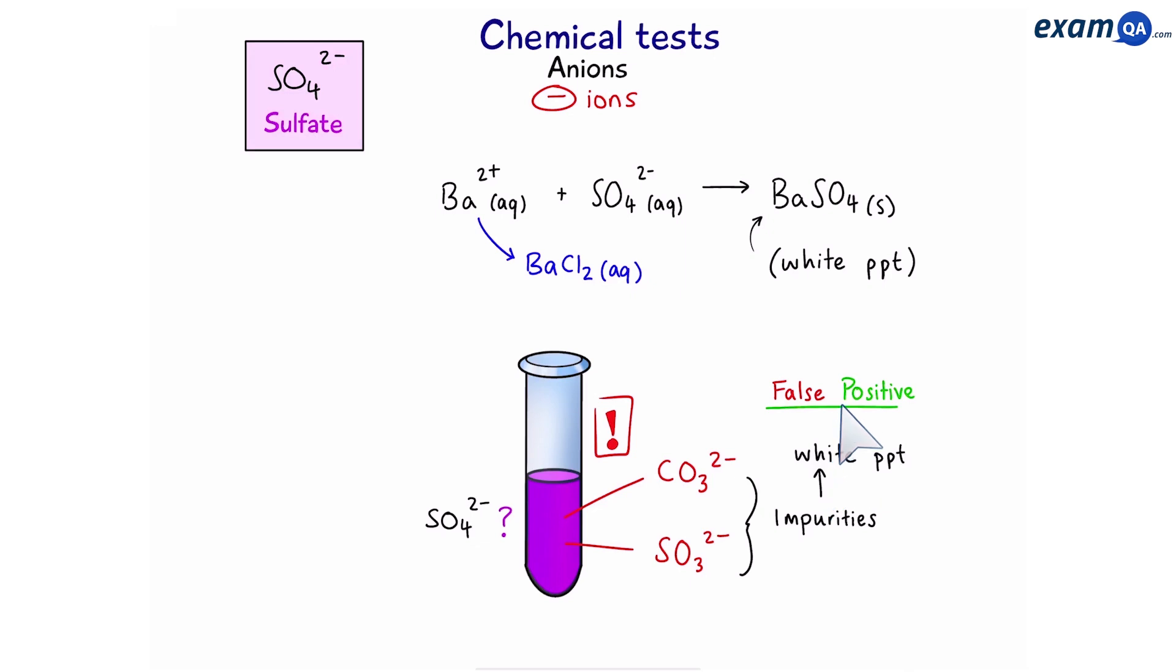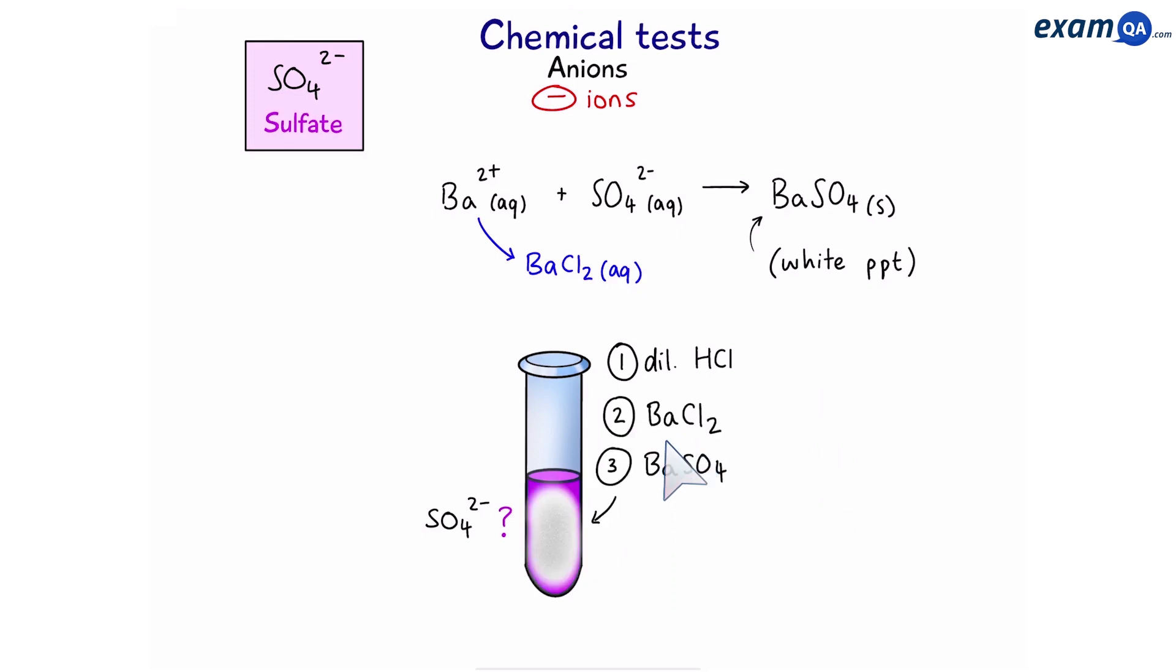So in order to prevent this first we're going to add dilute hydrochloric acid. This will react with the carbonate and sulfite ions removing them from the solution. Then we can add our barium chloride and this time if it goes white that means we had sulfate ions.